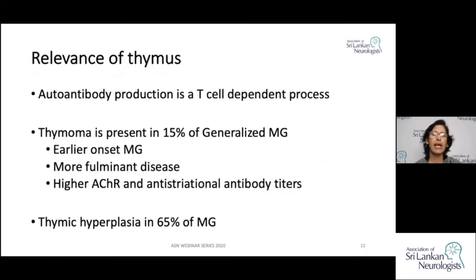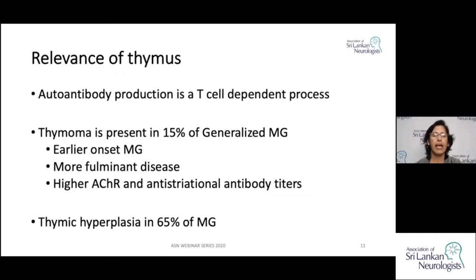The thymus has the highest influence on antibody production, which is a T cell-dependent process. Particularly in young myasthenics, about 15% of generalized Myasthenia Gravis patients have thymoma — generally younger patients with more severe disease and higher acetylcholine receptor and anti-striational antibody titers. In another 65% without thymoma, at least thymic hyperplasia is present, demonstrating the relevance of the thymus in causation of Myasthenia Gravis.